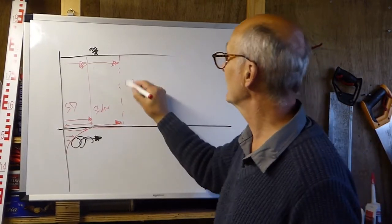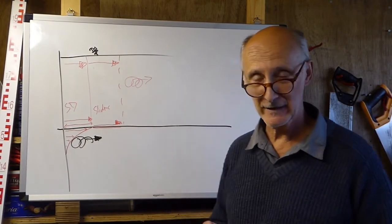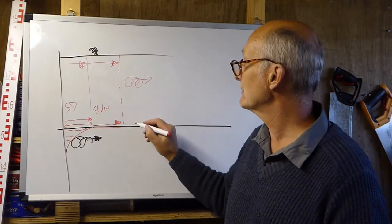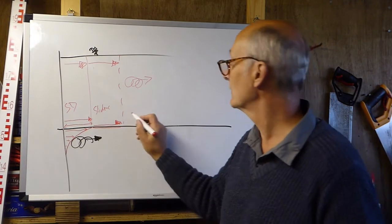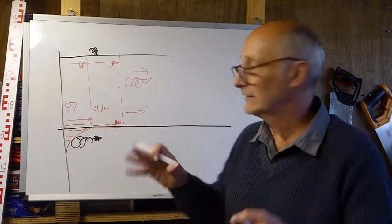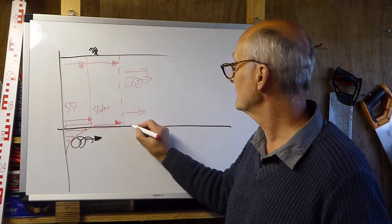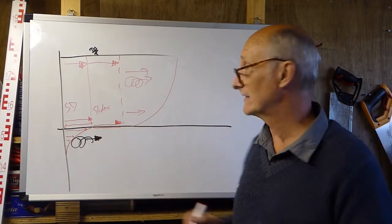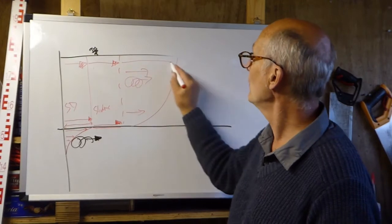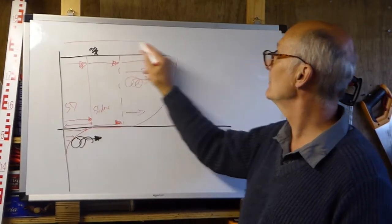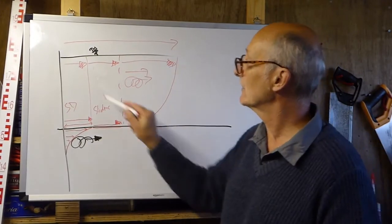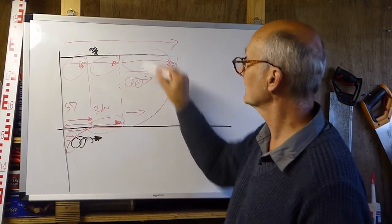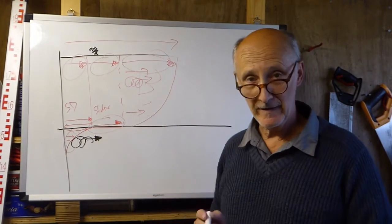On top of that, we have an amount of movement related to internal deformation — creep within the glacier. We'll come back to the details of that in a later session. Adding this in gives us the final velocity profile. So overall, total movement of the glacier surface is accomplished partly by subglacial deformation, partly by sliding of the glacier across its bed, and partly by internal deformation within the ice itself.